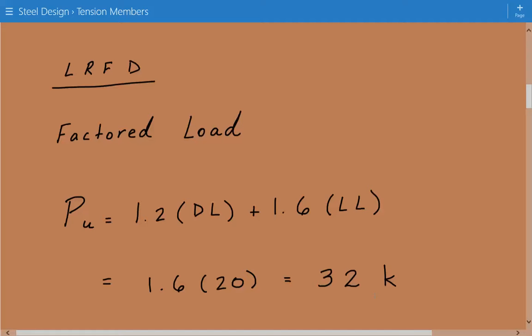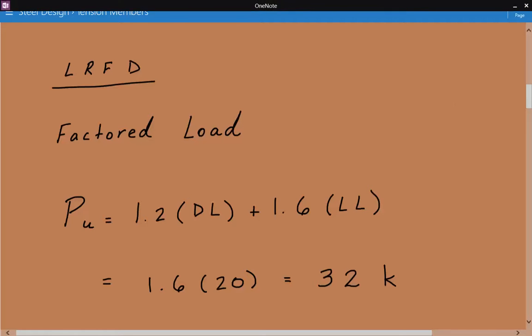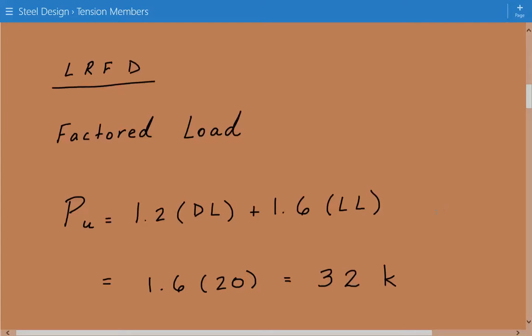And it's going to be equal to 1.2 times dead load plus 1.6 times live load. So since we don't have a dead load, we just have a live load of 20 kips. It's going to be 1.6 times 20 kips equals 32 kips.